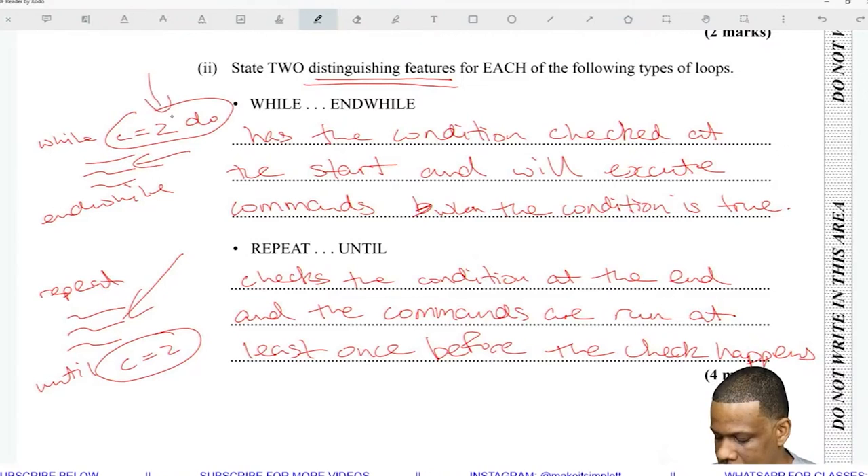You are hired as a programmer to write pseudocode for a supermarket. You have to prompt the cashier to enter the price and quantity of items, calculate discount amount of 5 percent.